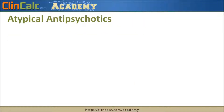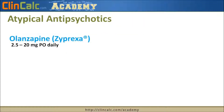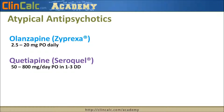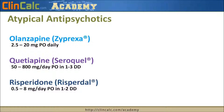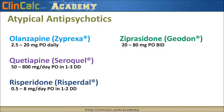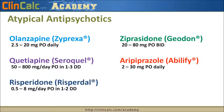There are five atypical antipsychotics we'll be discussing. The first is olanzapine, brand name Zyprexa, one of the first to market and still commonly used. Then we have quetiapine or Seroquel, risperidone or Risperdal, ziprasidone or Geodon, and finally aripiprazole or Abilify — both the brand and generic names start with 'A,' which can be helpful to remember.